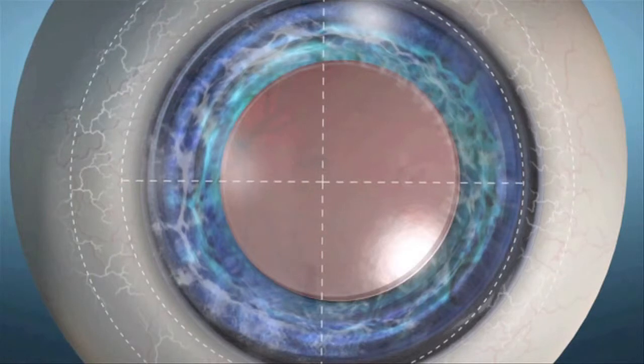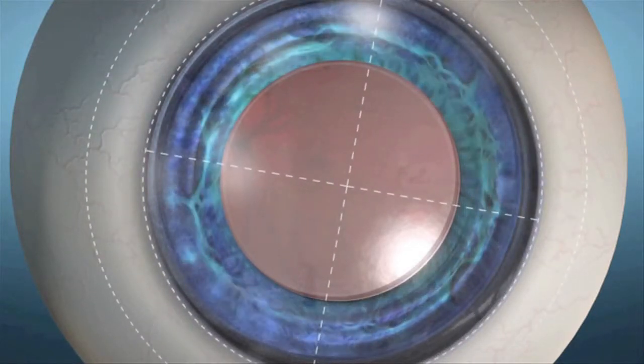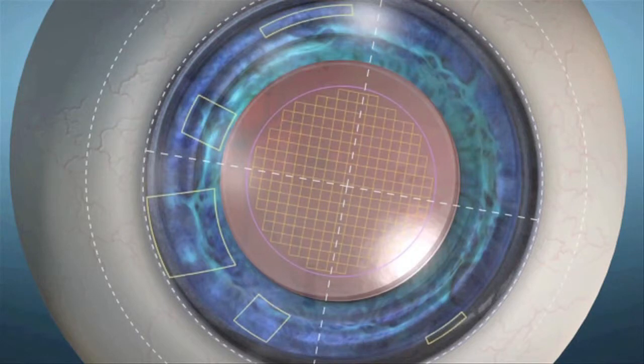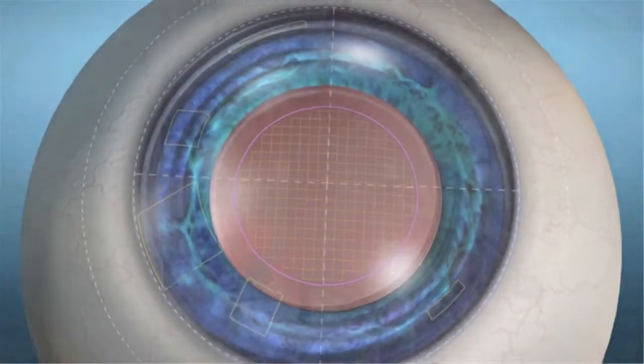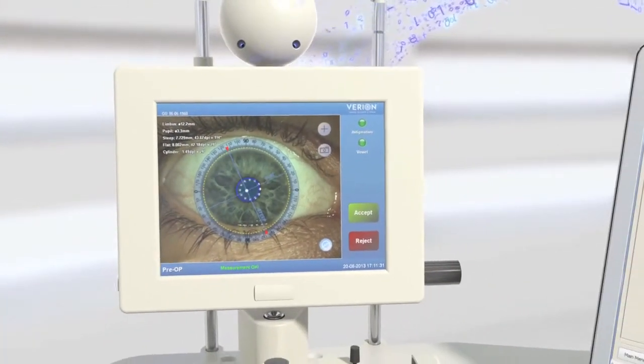This fingerprint of the eye is used to register and track the eye as a visual reference of all incisions, capsulotomy, and IOL positioning. With the Veryon reference unit, surgeons can also simply and confidently develop their surgical plan.